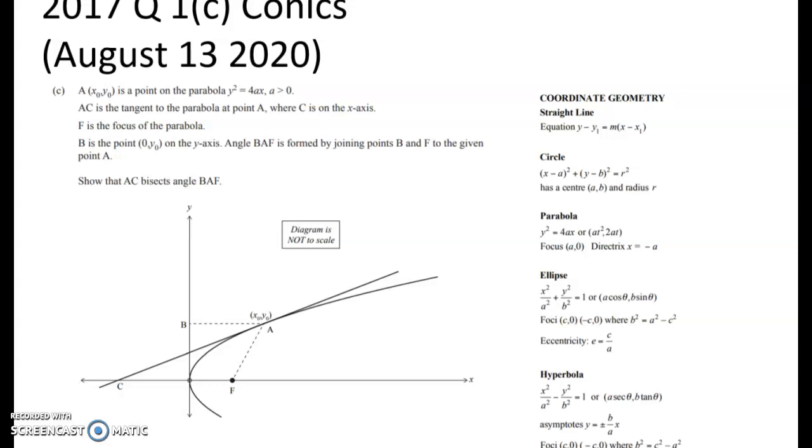We've got a conics question here, all about a parabola. We've got a point on the parabola y squared equals 4ax. Over here I've put in the bits from the formula sheet because they're going to help us out. The main equation for a parabola in Cartesian form is y squared equals 4ax. The focus is also given to us, and we're going to use that in this question. We're told that AC is the tangent to the parabola at point A. A has coordinates (x₀, y₀) and C is this point here on the x-axis.